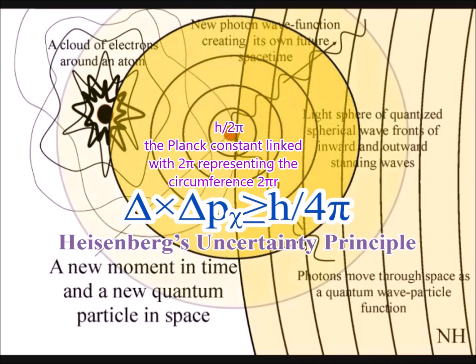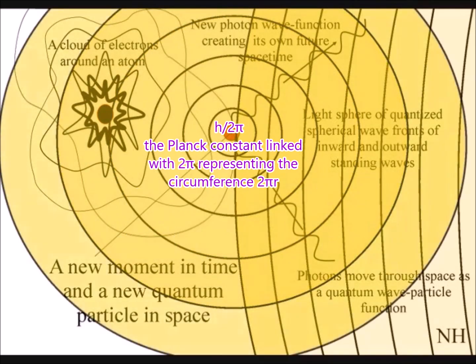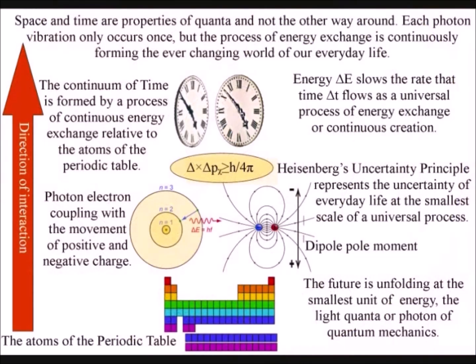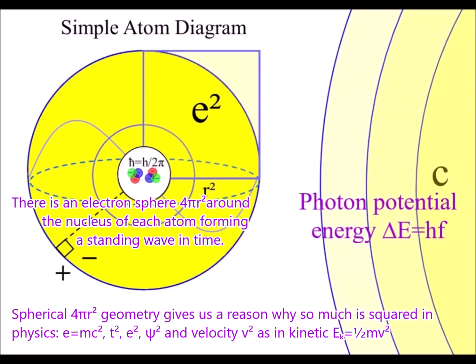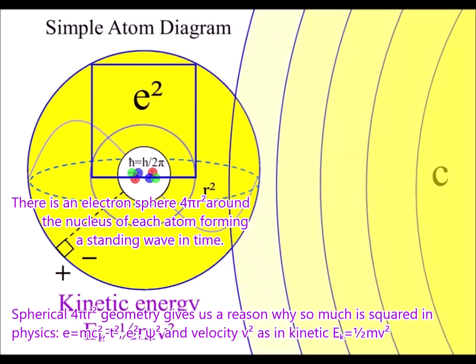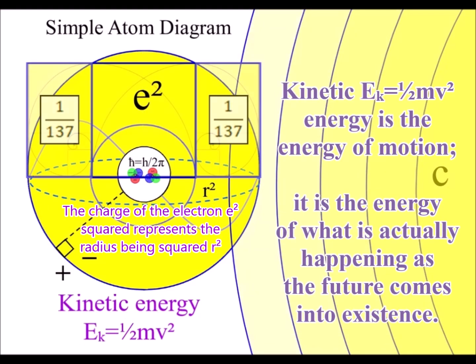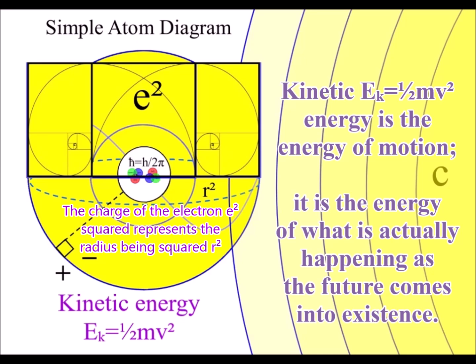This energy is converted back to another form of energy in a very local and quantized event by light photon energy continuously transforming potential energy into the kinetic energy of matter in the form of electrons. Kinetic energy is the energy of what is actually happening.